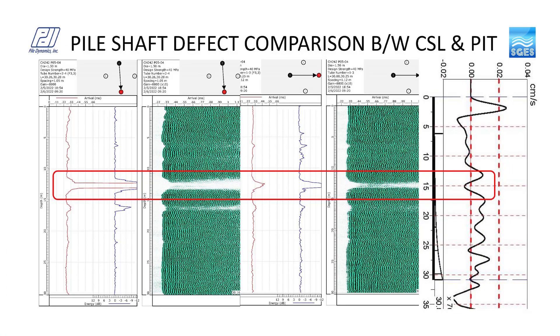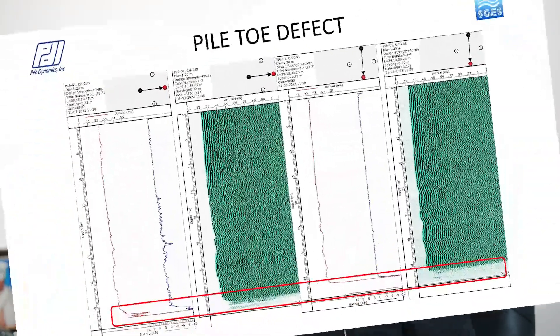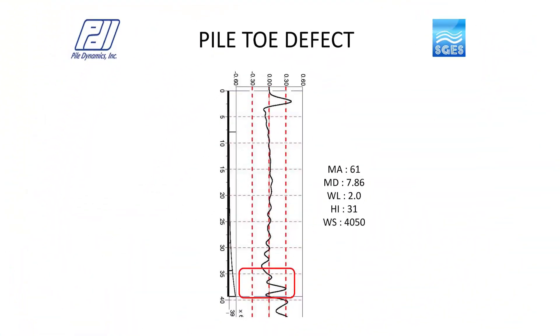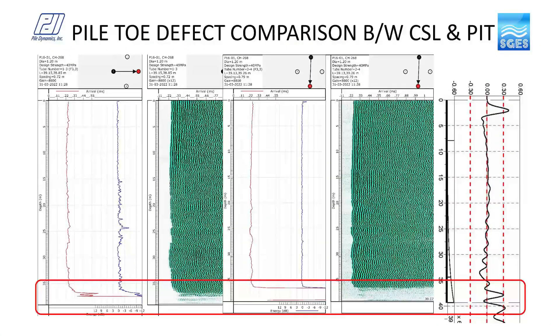Comparing the same pile, the CSL test shows complete loss of signal, making PIT and CSL results comparable. For a toe defect example: the CSL test results show complete loss of signals towards the bottom of the pile, delay in first arrival time, and reduction in energy. In the PIT results, the velocity time history shows a positive reflection ahead of the toe. The uncertainty in locating the toe can be eliminated by performing a CSL test with access tubes embedded as close to the pile bottom as possible, confirming a toe defect.